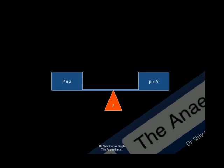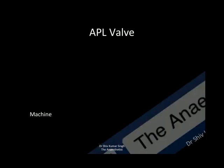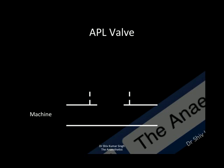This principle is used in many places in the machines and components of machines. One of them, used by everyone day in day out, is an APL valve. Looking at the components of an APL valve: it is nothing but a T-piece — you have the machine end, the patient end, and the expiratory port.